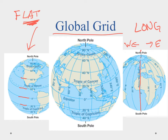So zero degrees latitude is our equator, and latitude measures how far north or south. We use longitude from the prime meridian to determine how far east or west we are. If I know a point at zero, zero, I can measure how many degrees north and how many degrees east and find that position. That's why we call this a global grid — it gives us the ability to specifically plot any point on the earth.